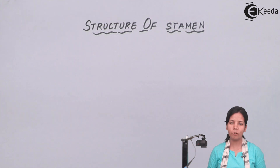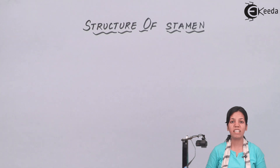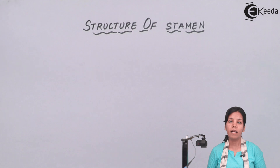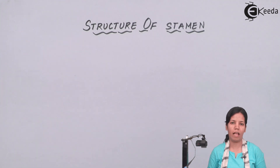There is a tissue called connective. When we say connective, it means something which connects two different things. Connective is a tissue that helps in the attachment of the anther — the parts of the anther.